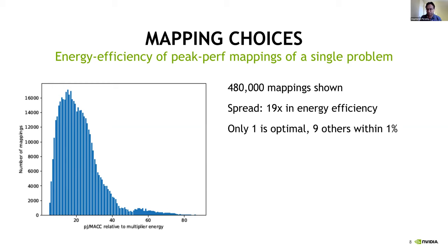This experiment captures 480,000 mappings. The x-axis shows energy in picojoules per MAC, and the y-axis shows the number of mappings falling into each energy bucket — essentially a histogram. The delta between the most efficient mapping and the least efficient is 19x. Of these 480,000 mappings, only one happens to be optimal, with nine others within 1% of optimal. A very small number of mappings are actually optimal.